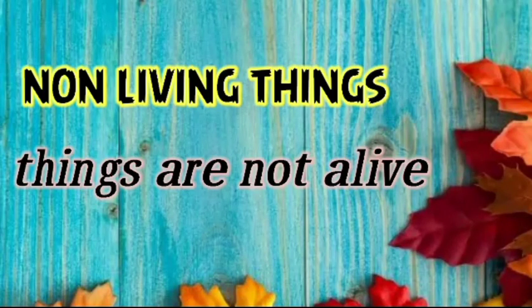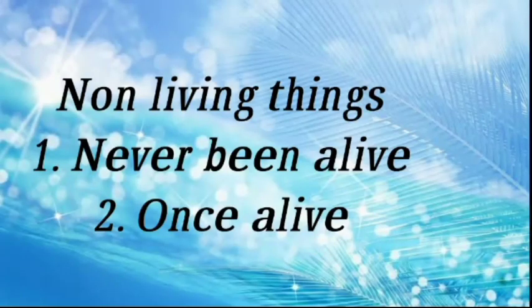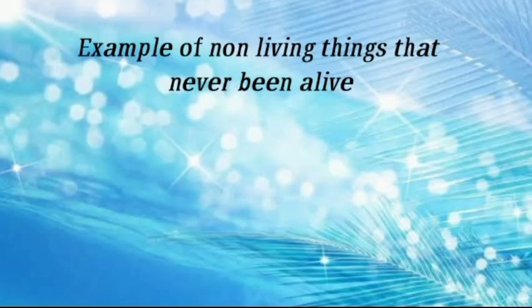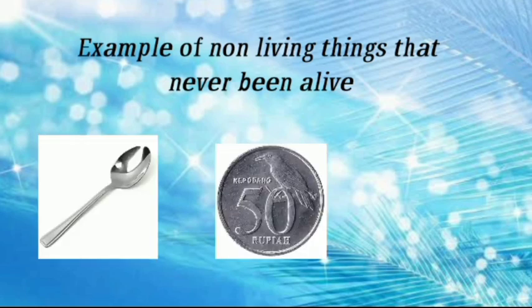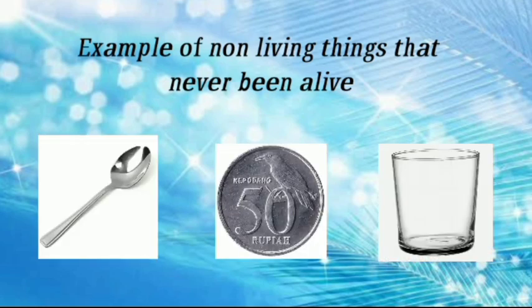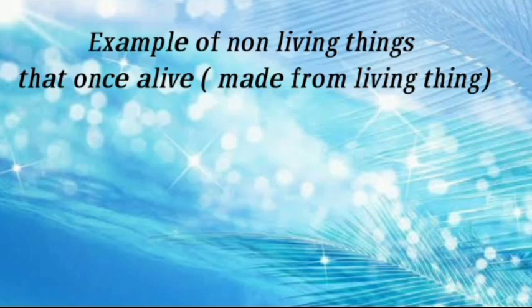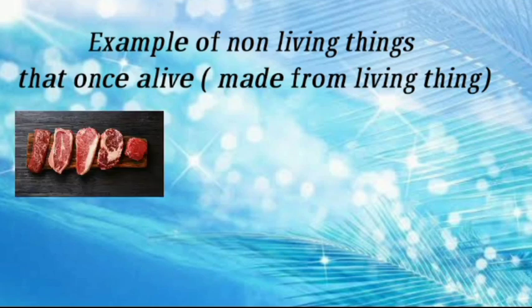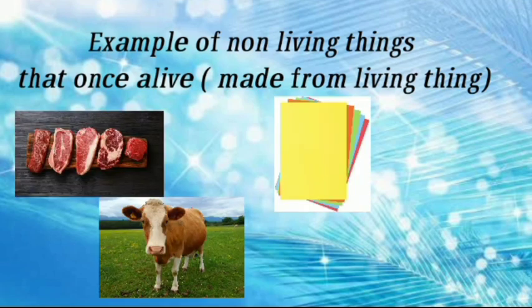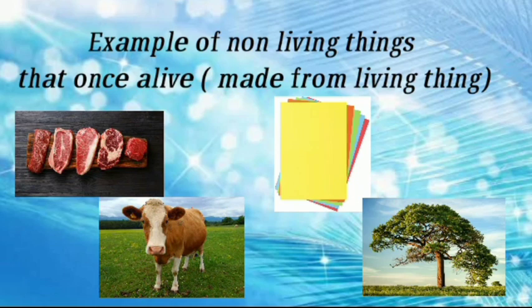Non-living things are things that are not alive. Non-living things are divided into two categories: never been alive, and once alive. Examples of non-living things that never been alive: spoon, coin, and glass. Examples of non-living things that were once alive — made from a living thing — include meat from cow and paper from tree.